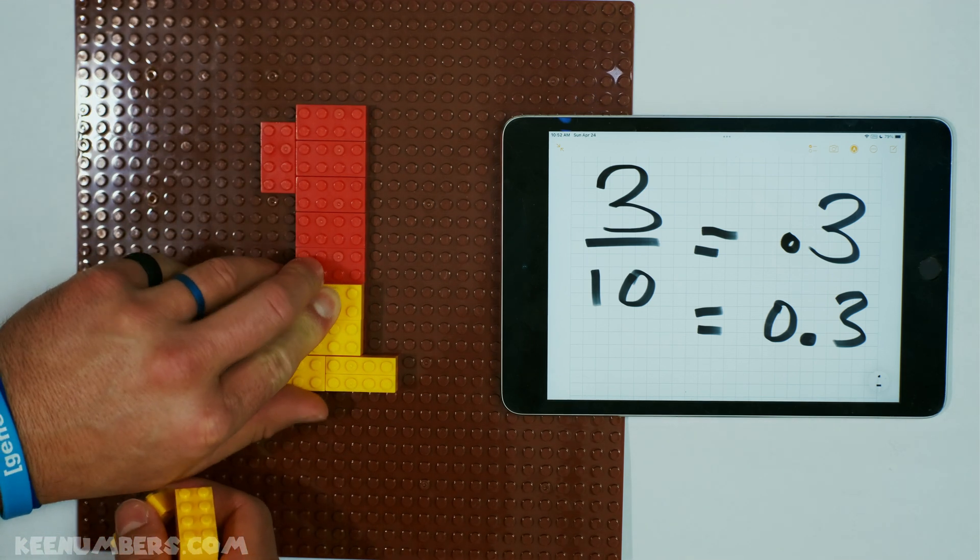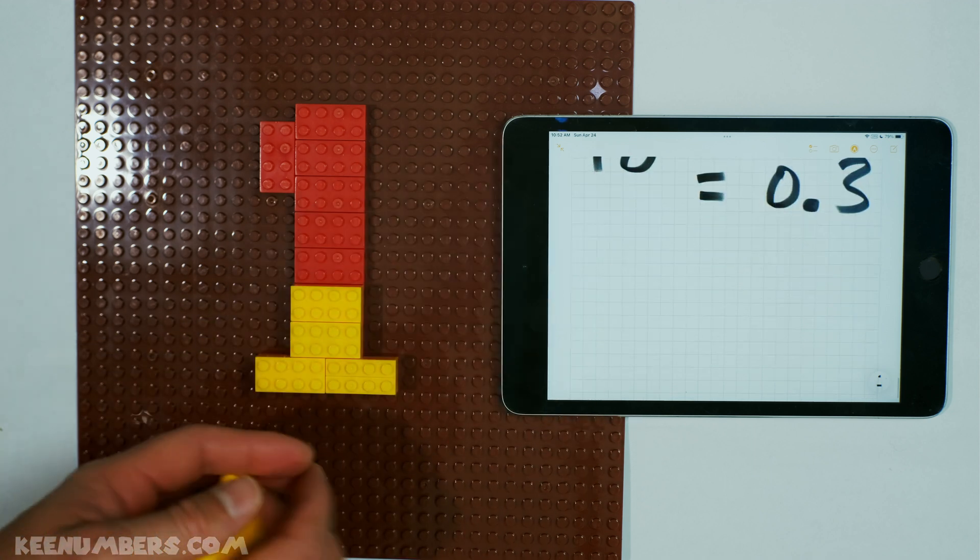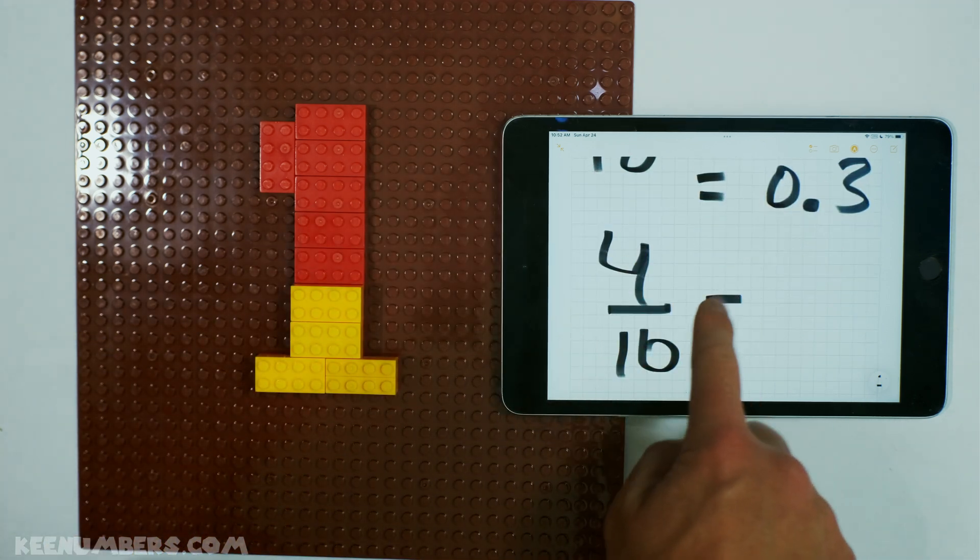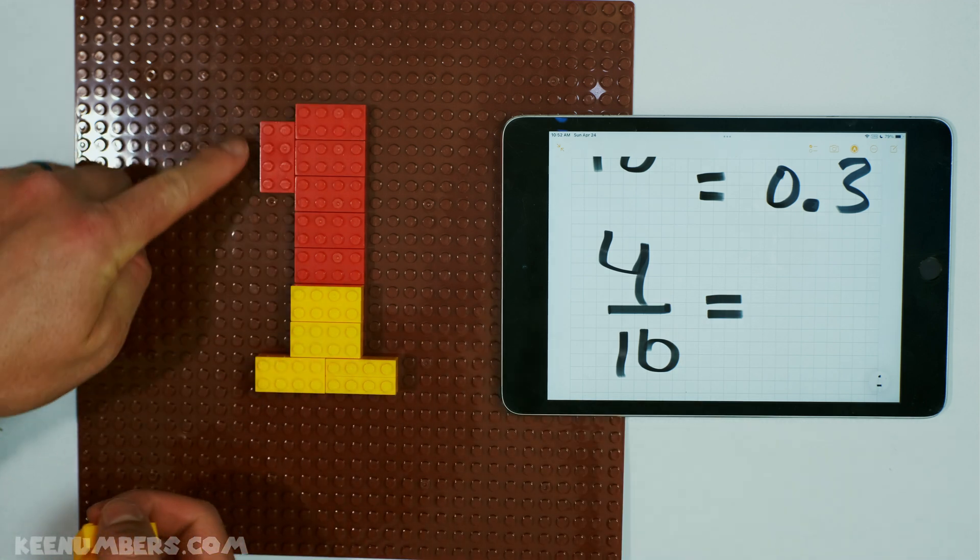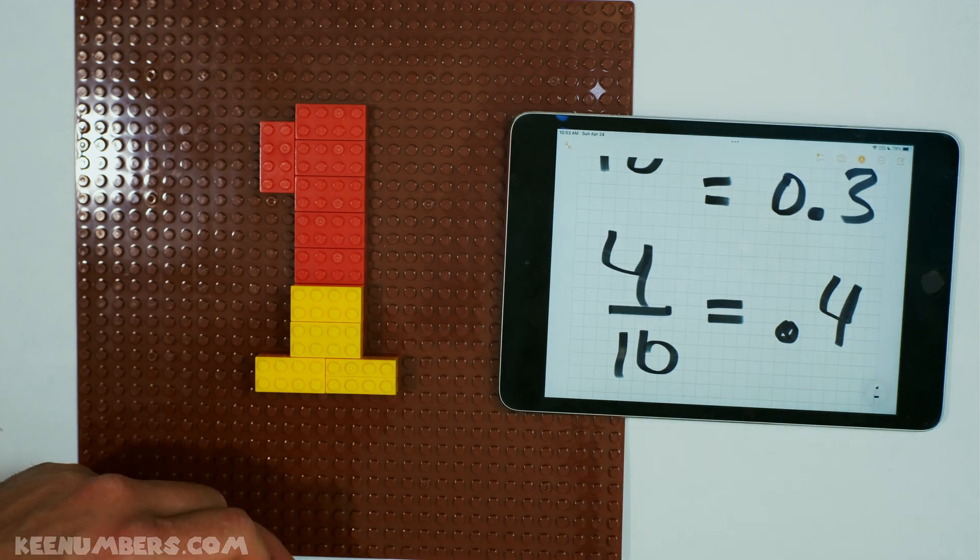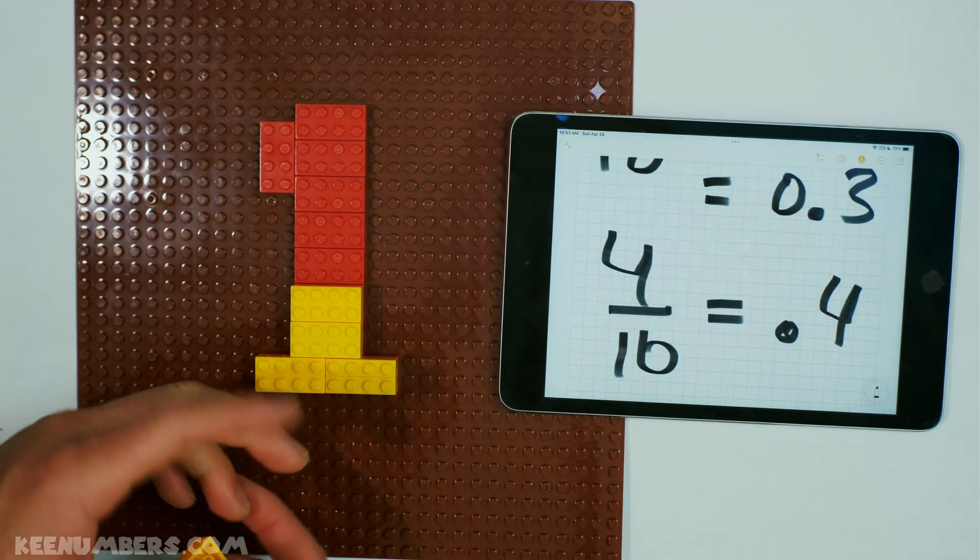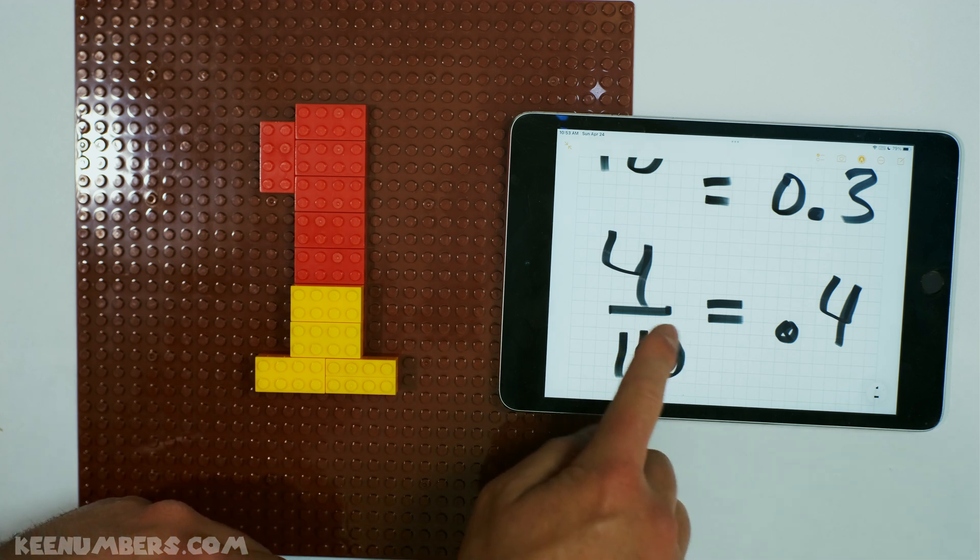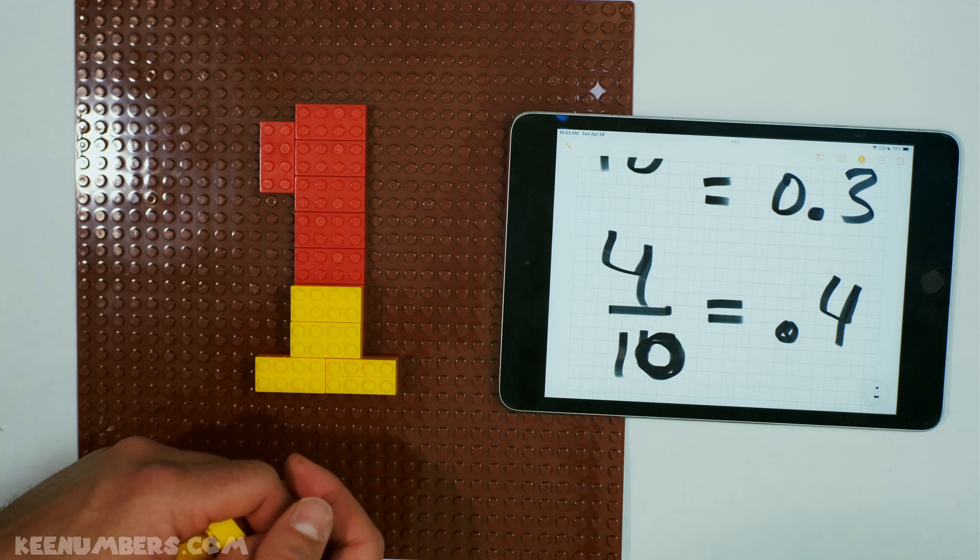Let's not stop. Don't get scared. Let's do 4 tenths. If you have 4 equal parts that make up 1 whole number, then you can write this as 0.4. That's a 0, not a 16.